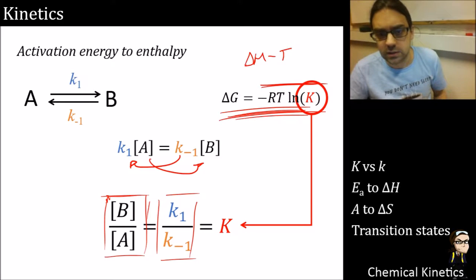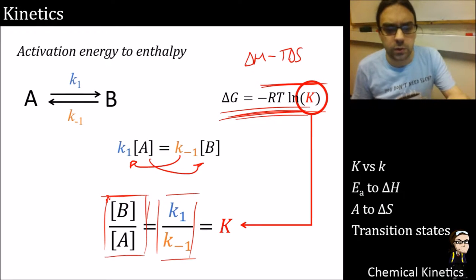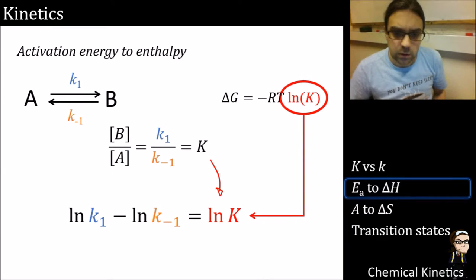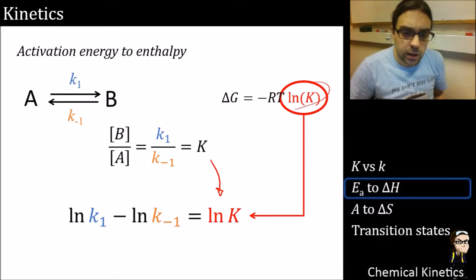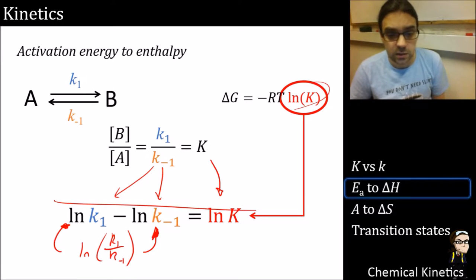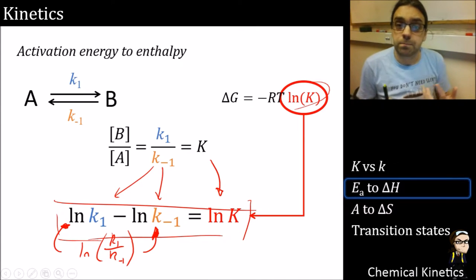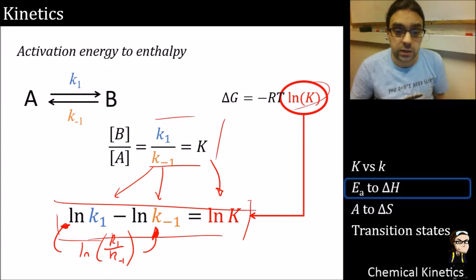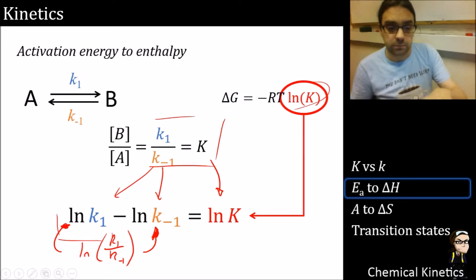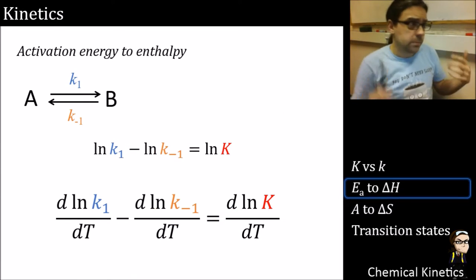That gives us a hint of what to do next. We convert K to log K and use log rules so that the log of our rate constants becomes subtractive - log of k₁ over k₋₁. Previously, the ratio of rate constants equaled K; now the difference of their logs equals log K. It's just a mathematical transformation that becomes very useful to us.